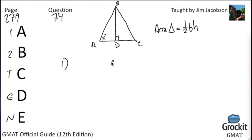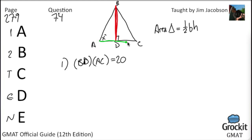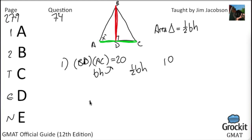Statement 1: the product of BD and AC is 20, so BD times AC equals 20. AC is the base of the triangle and BD is the height. The area would be one-half of that product — one-half of 20, which is 10. We could have stopped as soon as we recognized that 20 was the base times the height. Statement 1 is sufficient; we can eliminate B, C, and E.